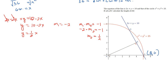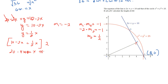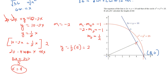The line y equals one half x passes through the origin, so the y-intercept b is 0. To find the intersection point, set 10 minus 2x equal to one half x. Multiplying both sides by 2: 20 minus 4x equals x. Adding 4x to both sides: 5x equals 20, so x equals 4. Then y equals one half of 4, which is 2. So point E is at (4, 2).